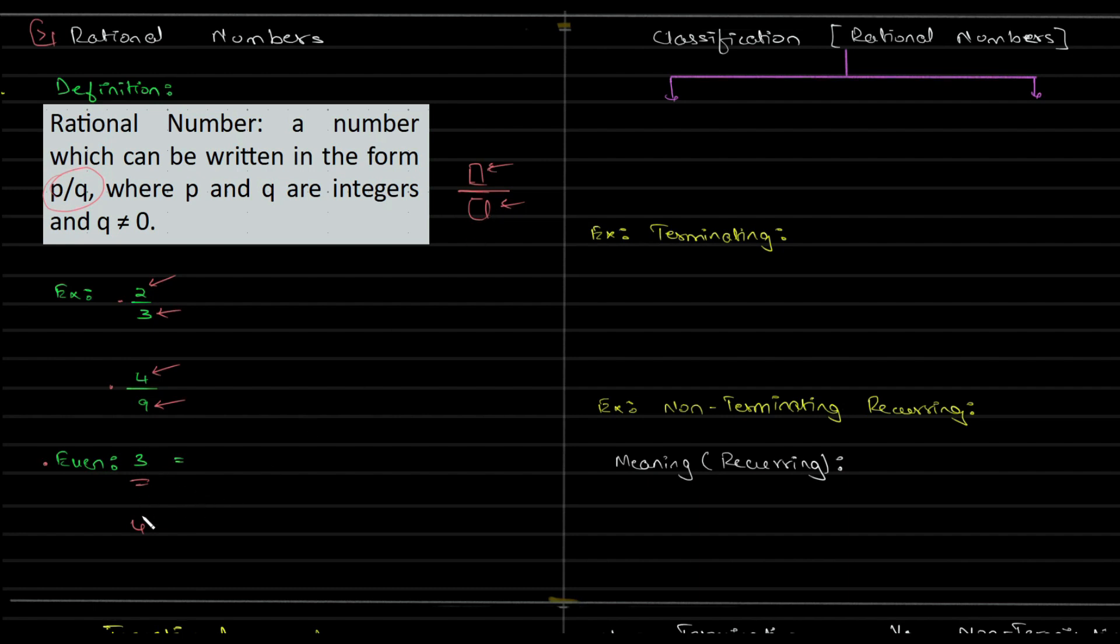But we do not see any denominator over here. How is 3, or 4, or minus 5, or minus 51 rational numbers because there is no denominator? Well, we can write them as 3 divided by 1, 4 divided by 1, minus 51 divided by 1.